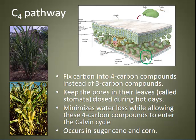In the C4 pathway, carbon dioxide is fixed into four-carbon compounds instead of three-carbon compounds. During the hottest part of the day, C4 plants have their stomata partially closed. However, certain cells have a special enzyme that can fix even low levels of carbon dioxide. A molecule is created that carries CO₂ to other cells where the Calvin cycle functions, minimizing water loss. Sugarcane and corn are two examples of C4 plants, as are many grasses.